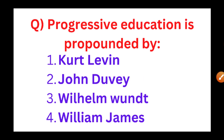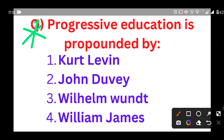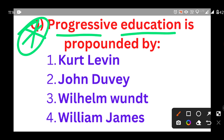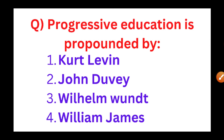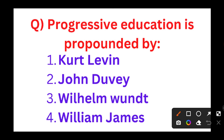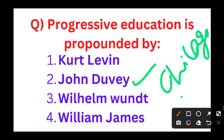The next question, which is very important: Progressive education is propounded by. The options are Kurt Lewin, John Dewey, Wilhelm Wundt, and William James. The progressive education is propounded by John Dewey. He built the universal elementary schools, or lab schools, at Chicago, which is also very important.